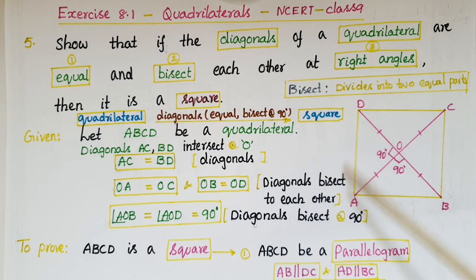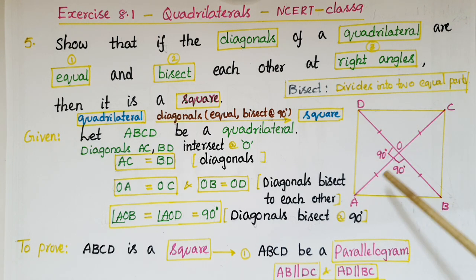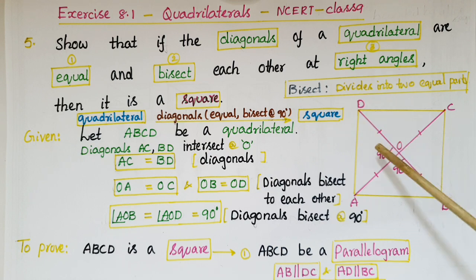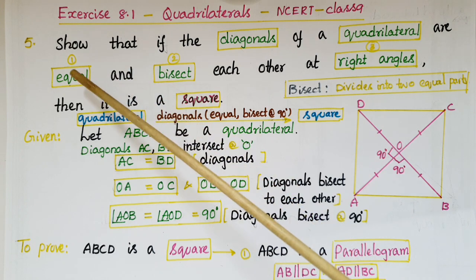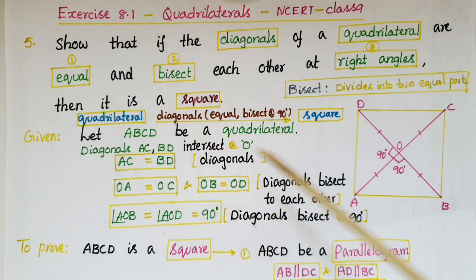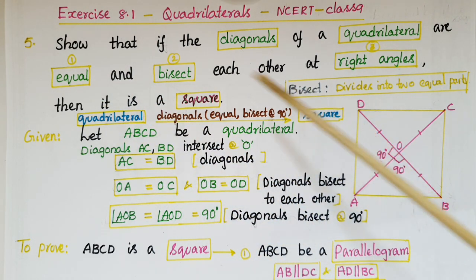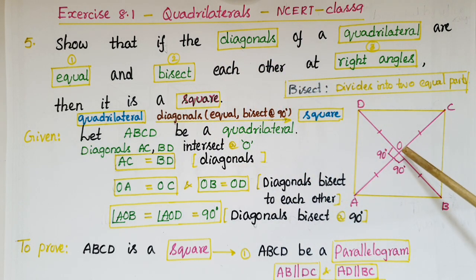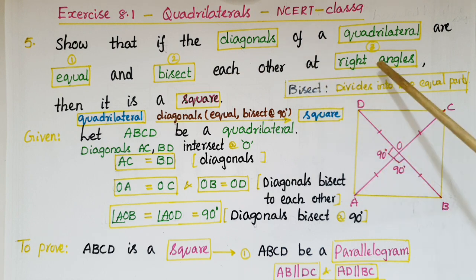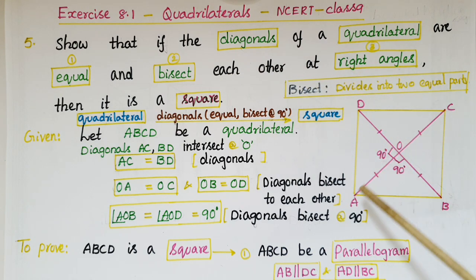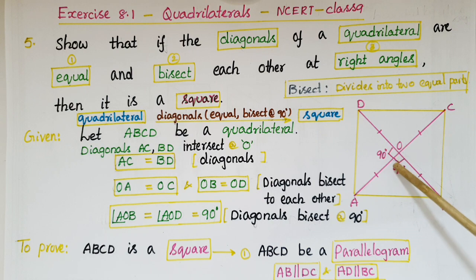Let ABCD be a quadrilateral bounded by 4 line segments, where AC and BD are diagonals and they intersect at O. The given conditions are: first, the diagonals are equal, so AC is equal to BD. Second, the diagonals bisect each other, meaning OA equals OC and OB equals OD. Third, the diagonals bisect each other at right angles, so these four angles are 90 degrees.